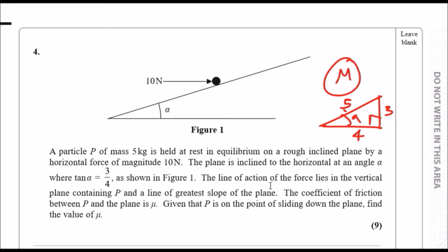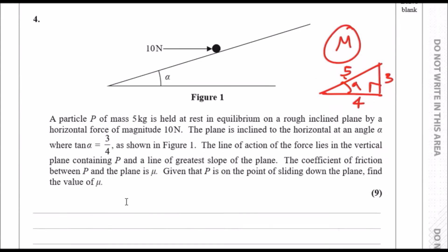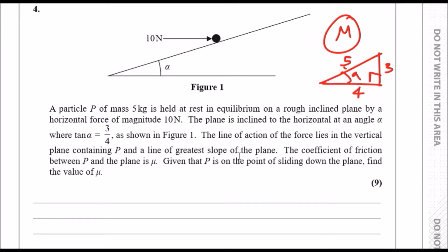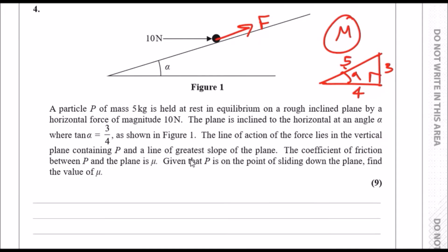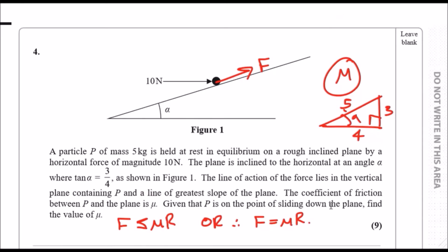The line of action of the force lies in the vertical plane containing P and the line of greatest slope of the plane. The coefficient of friction between P and the plane is μ. Given that P is on the point of sliding down the plane, if it's sliding down, there's some friction behind it this way, so this is the friction value F. At limiting equilibrium, F is equal to μR, so the coefficient of friction times the reaction of the plane.